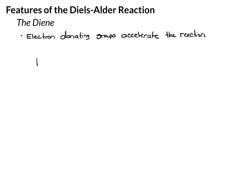Let's look at a series of dienes. If you have a withdrawing group on the diene, like a nitro group, that's going to be a very slow Diels-Alder reaction. A bit faster than that will be an unsubstituted diene. We can increase the rate further by adding an electron donating group — for example, a methoxy group, OCH3. Because of the lone pairs on that oxygen, that's a donating group, so this is going to make for a fast Diels-Alder reaction.